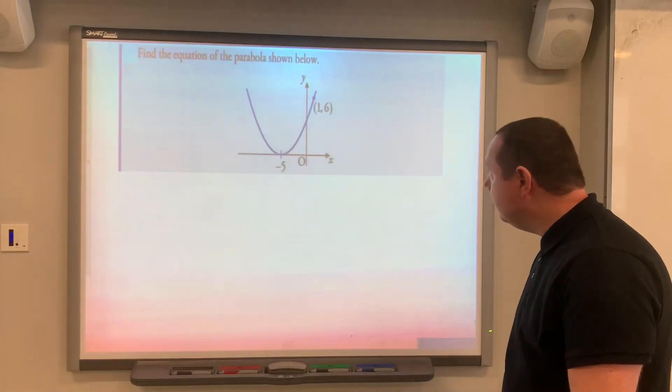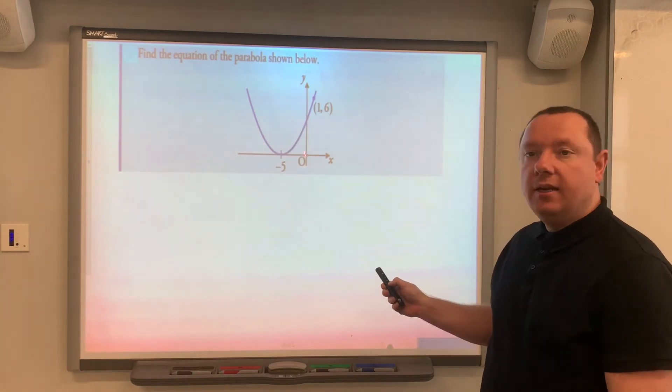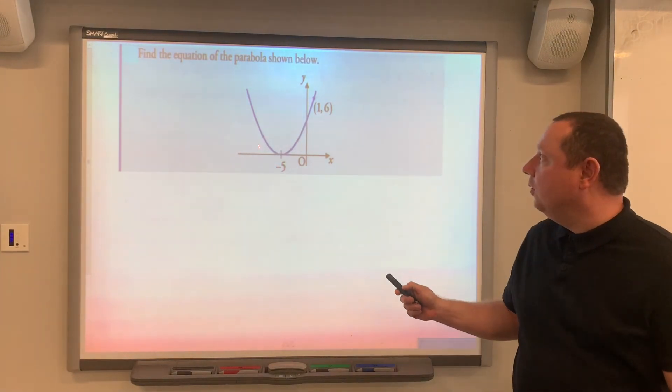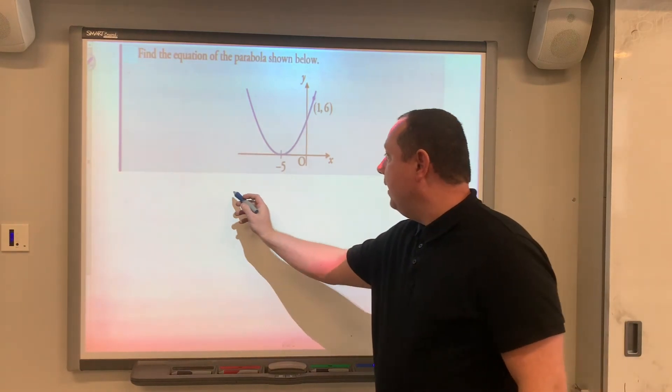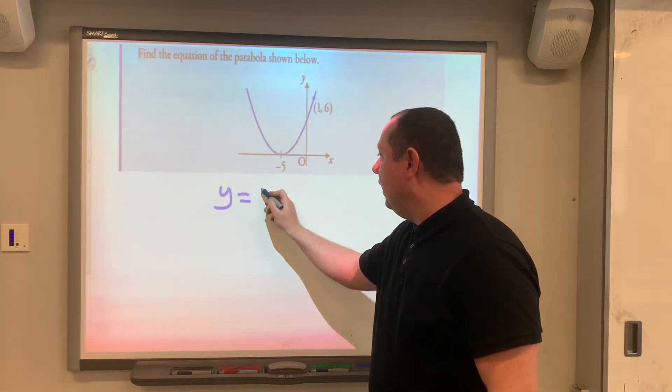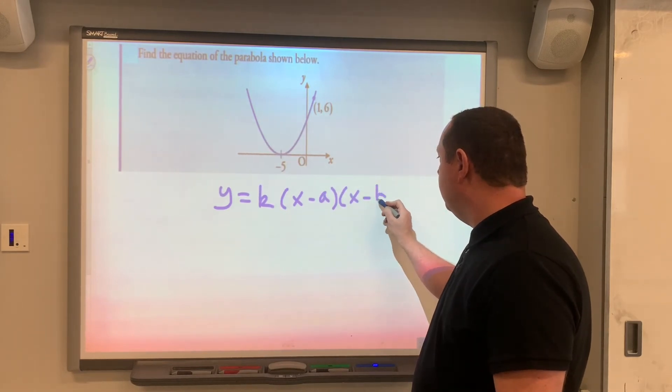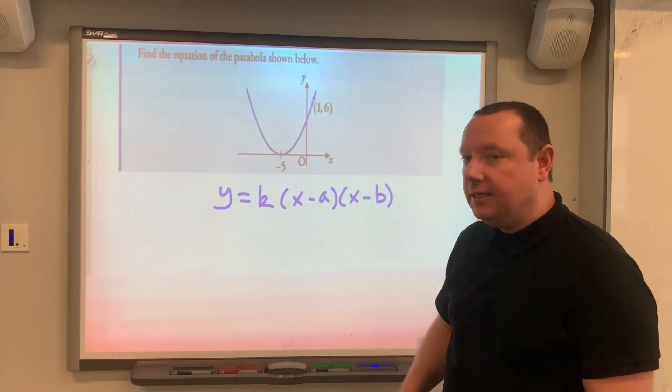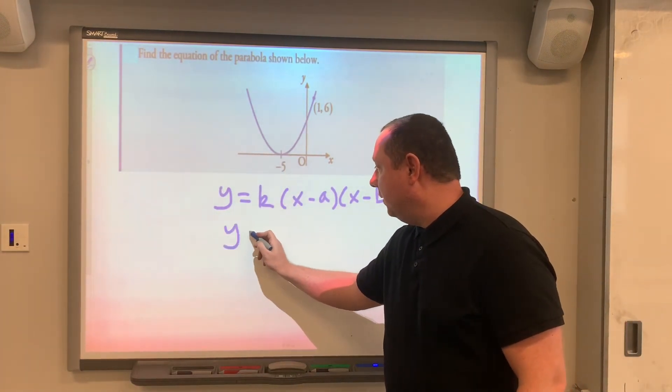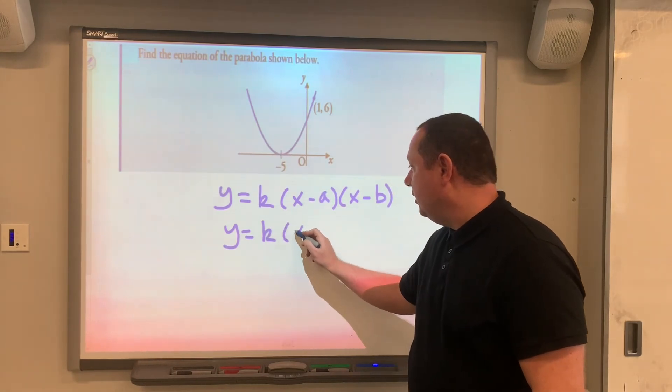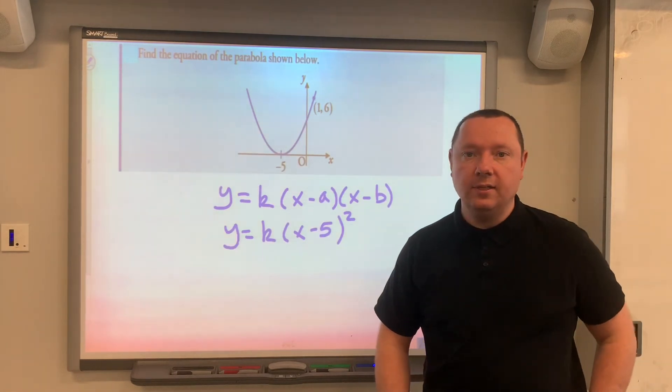Example three: Find the equation of the parabola shown. Again, this is from the HSN notes, nicely drawn for us this time, so we don't have to draw it. We start off the same way: y must equal k(x minus a)(x minus b). But in this case, a and b are the same because the turning point is on the x-axis. So y must be k(x minus 5) squared, (x minus 5) times (x minus 5).